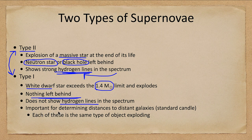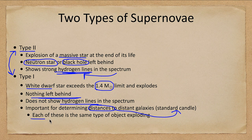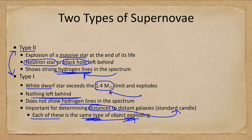These types of supernovae are extremely important for distances — remember our distance ladder, and we will come back to that with galaxies. These supernovae are important because they are examples of standard candles; they have a standard brightness. Every single one of these is the exact same type of object that explodes — they are all white dwarf stars and they all have a mass of 1.4 solar masses. Exactly the same. Whereas a type II supernova might have been 20, 30, or 40 solar masses, with different brightnesses, type Ia supernovae are all identical, and we'll see them again when we look at determining distances.